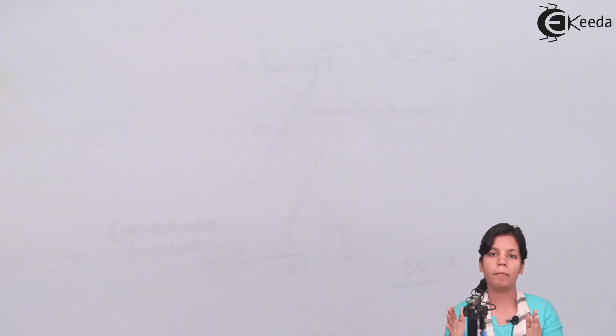Now DNA is anti-parallel, means when you take two strands of DNA, the two strands of DNA run 5 prime to 3 prime and 3 prime to 5 prime.